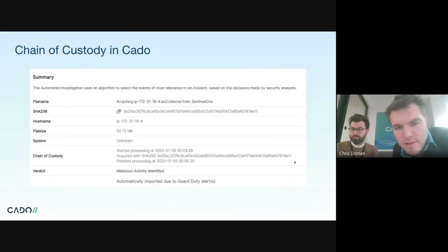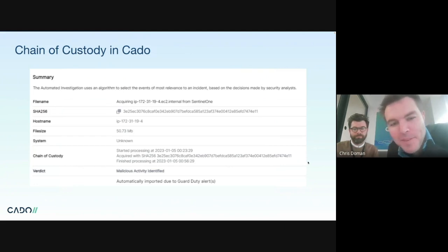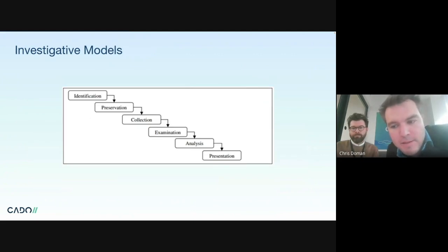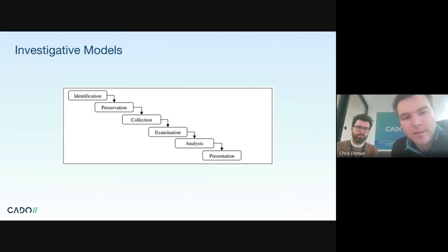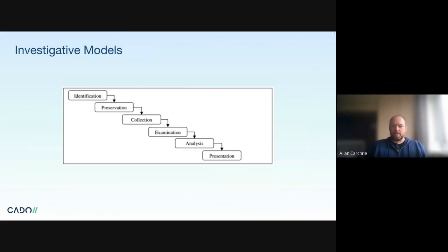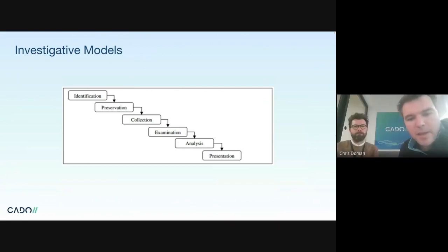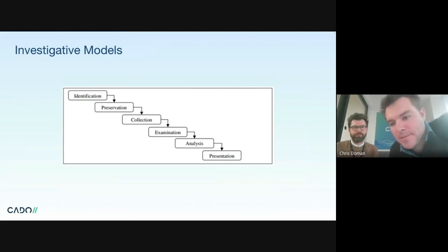We do a bunch of chain of custody in the cloud, which is unique - check out the link at the end for more. In terms of models for DFIR in general, there are quite a few: NIST and SANS for the incident handling process. The model on screen is more akin to the digital forensics aspects specifically. There's a lot of overlap between these models but some differences too, and fundamentally they just help you work out what to do next.